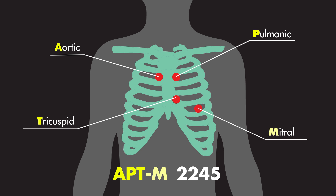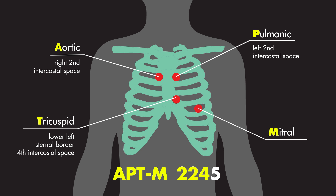The apartment number 2245 represents the location of the intercostal space of each respective listening area. That would be the right second intercostal space for the aortic valve, the left second intercostal space for the pulmonic valve, the fourth intercostal space at the lower left sternal border for the tricuspid valve, and the fifth intercostal space at the midclavicular line for the mitral valve.